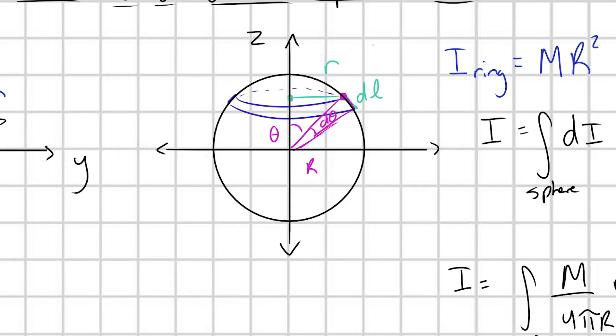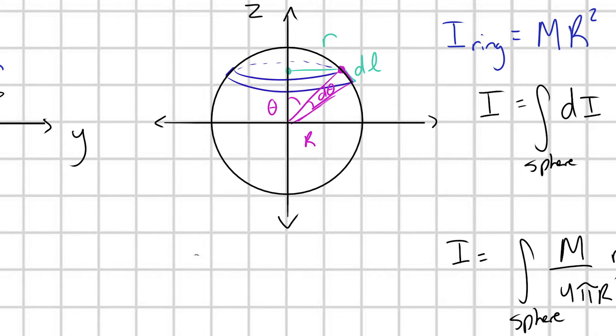what is this arc length dL going to be? Well, dL is going to be equal to r d theta. That's really easy. Okay, so if we've rewritten dL in terms of theta, we also need to rewrite our little r in terms of theta.